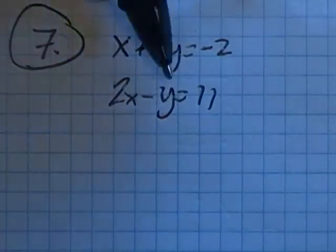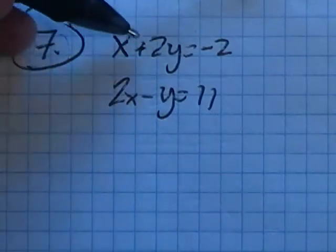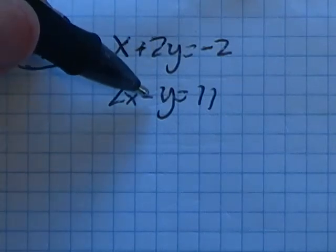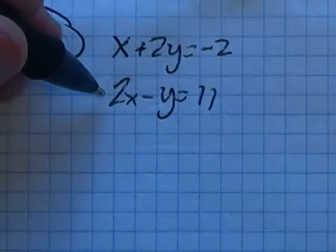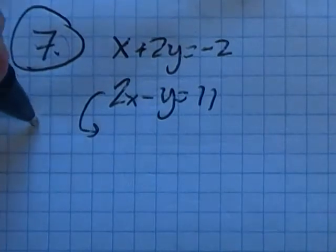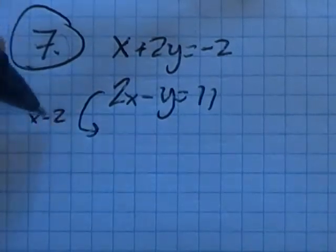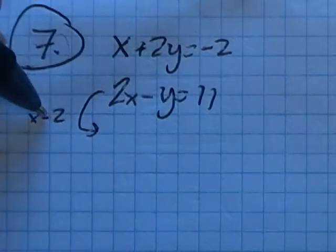It's set up for elimination, but notice I have a 2y here and a negative y here. So I think what I'm gonna do is multiply this by negative two... no, by positive two.